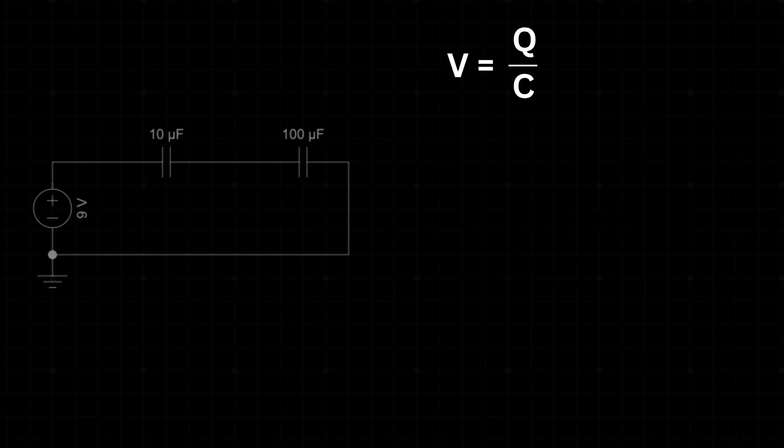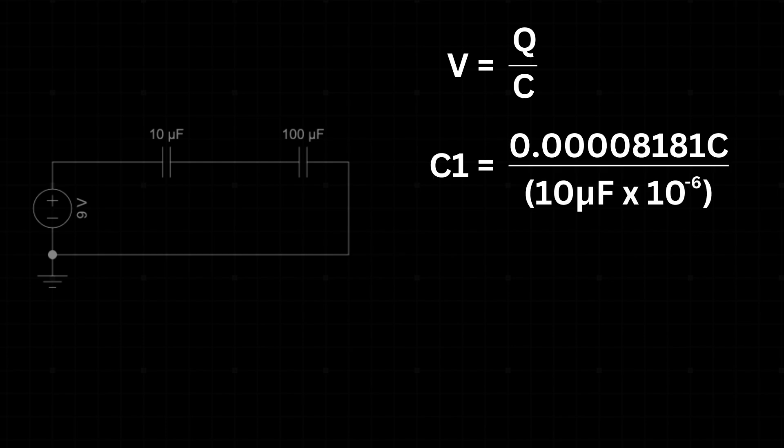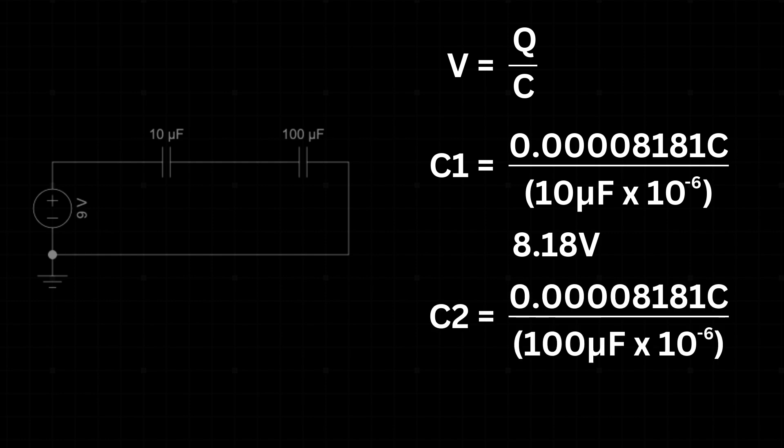To find the voltage across each capacitor, we use V equals Q divided by C. For C1, that's 81.81 microcoulombs divided by 10 microfarads equals 8.18 volts. For C2, it's 81.81 microcoulombs divided by 100 microfarads equals 0.8181 volts.